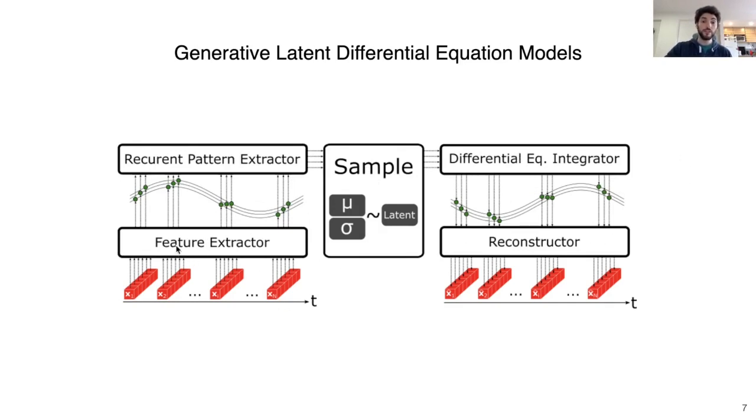First, each frame is passed independently through a feature extractor, usually reducing the dimensionality. Then it is sequentially processed by a recurrent pattern extractor in order to learn the distributions of the initial conditions, or initial conditions and parameters, of a differential equation which will be next integrated.